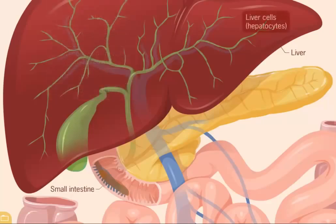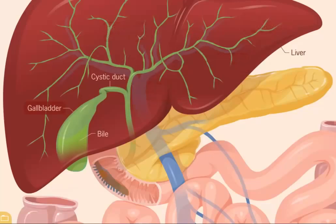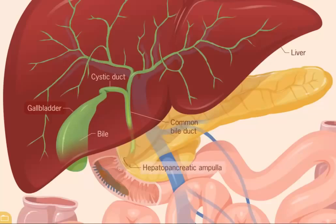Liver cells, known as hepatocytes, secrete the constituents of bile into tiny bile canaliculi, which flow into larger hepatic ductules that eventually combine to form the right and left hepatic ducts. Bile then flows into the common hepatic duct and cystic duct, where it enters the gallbladder to be concentrated and stored. During digestion, the gallbladder contracts and pushes the bile through the cystic duct and common bile duct, where they join the pancreatic duct at the hepatopancreatic ampulla. The bile then empties into the duodenum through the major papilla.